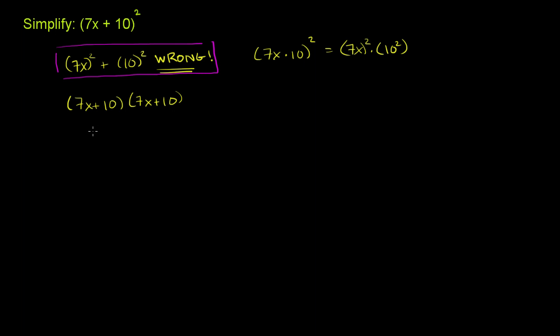If you only did it once, you'd only have one 7x plus 10. So we're really just multiplying two binomials. They just happen to be the same one. And you could use FOIL. You could use the distributive method. But this is actually a special case when you're squaring a binomial. So let's just think about it as a special case first.